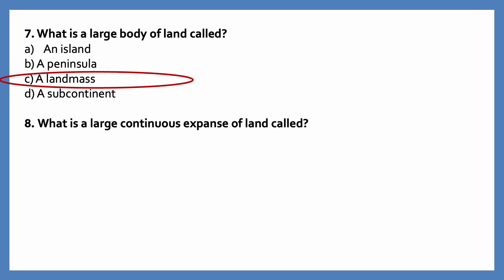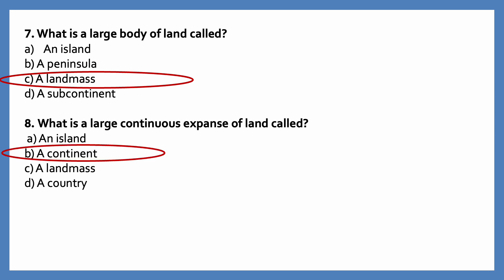What is a large continuous expanse of land called? Options are an island, a continent, a landmass, a country. The correct answer is a continent. A large continuous expanse of land is called a continent.